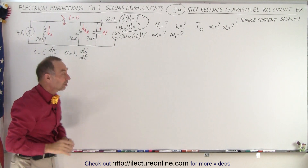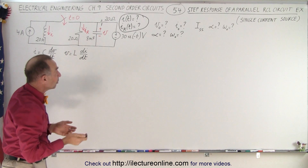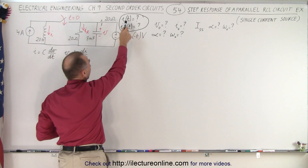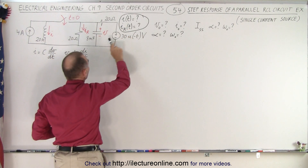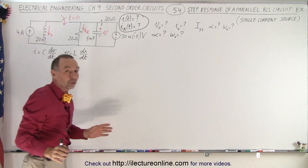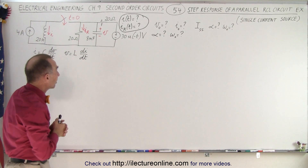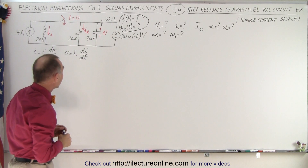So you see there's some initial conditions we have to deal with. Ultimately what we're trying to do is find the current as a function of time in the circuit, and we're trying to find the current to the resistor as a function of time in that particular circuit.